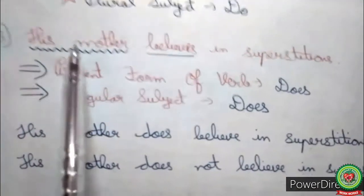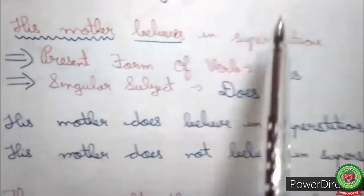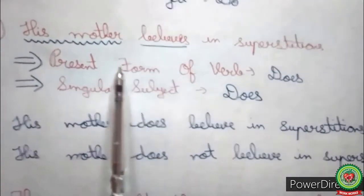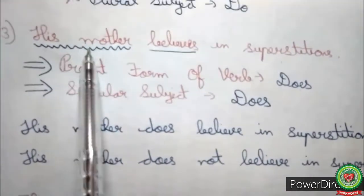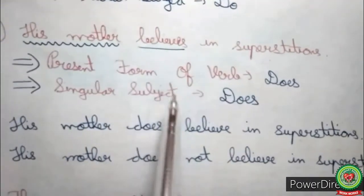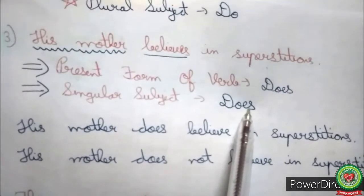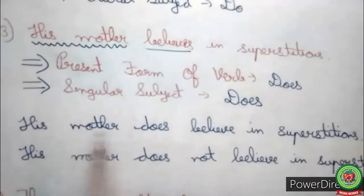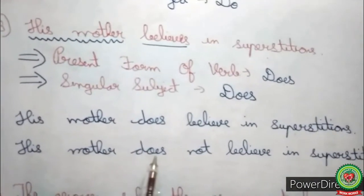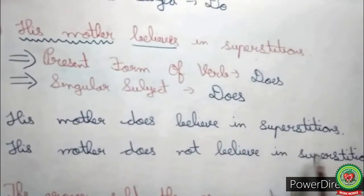Look at the third sentence: 'His mother believes in superstitions.' 'Believes' is the present form of the verb, and 'his mother' is a singular subject. So we add 'does' as the helping verb, and the sentence becomes: 'His mother does believe in superstitions.' Now adding 'not,' the sentence becomes: 'His mother does not believe in superstitions.'